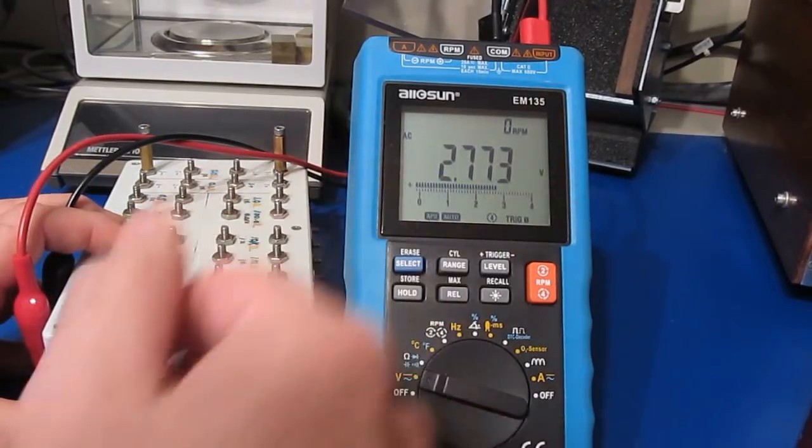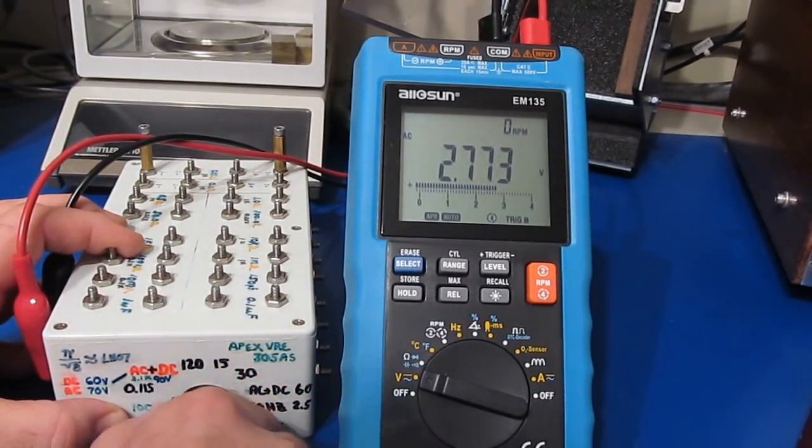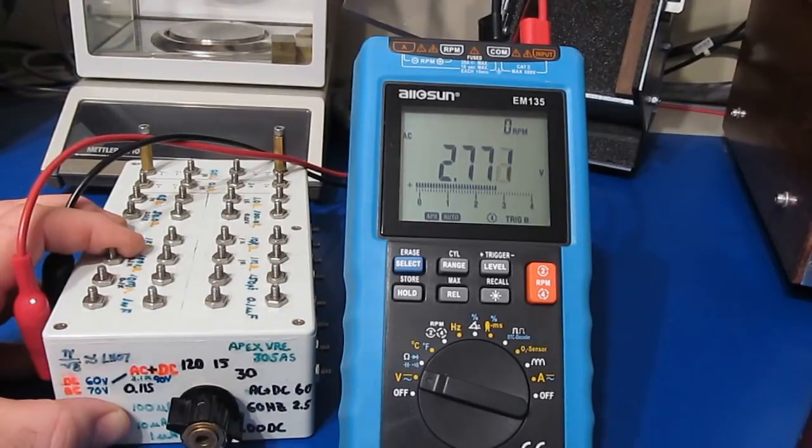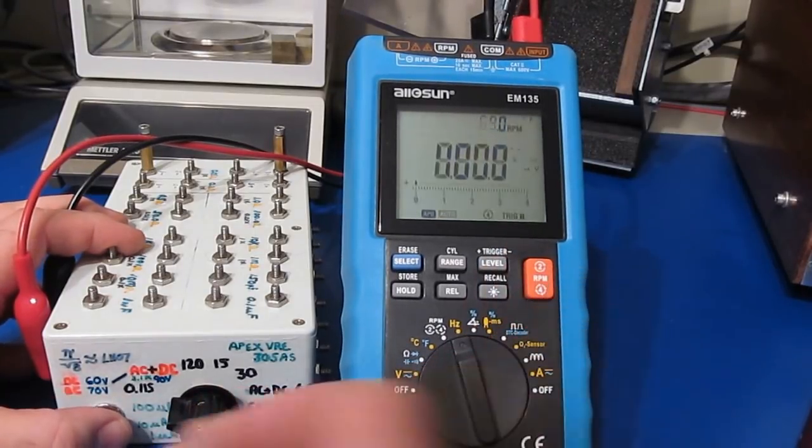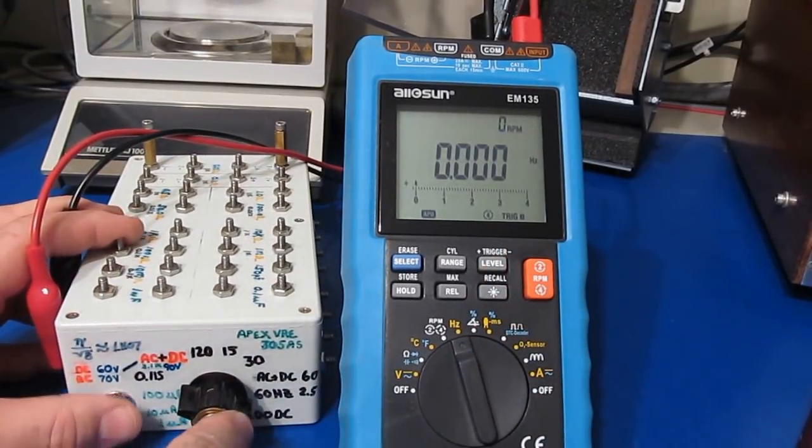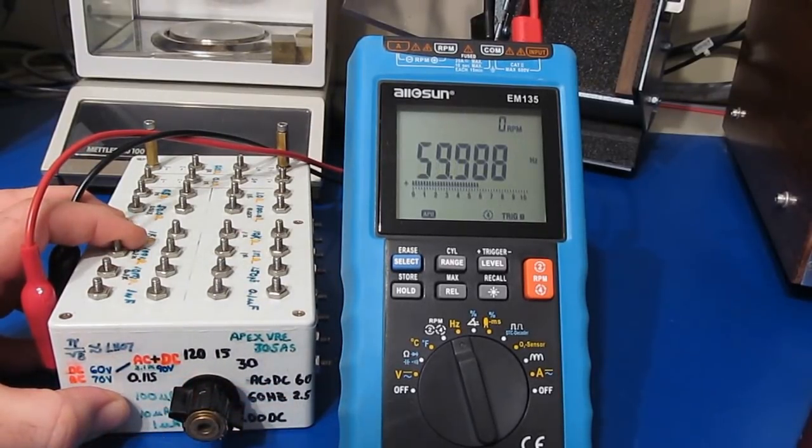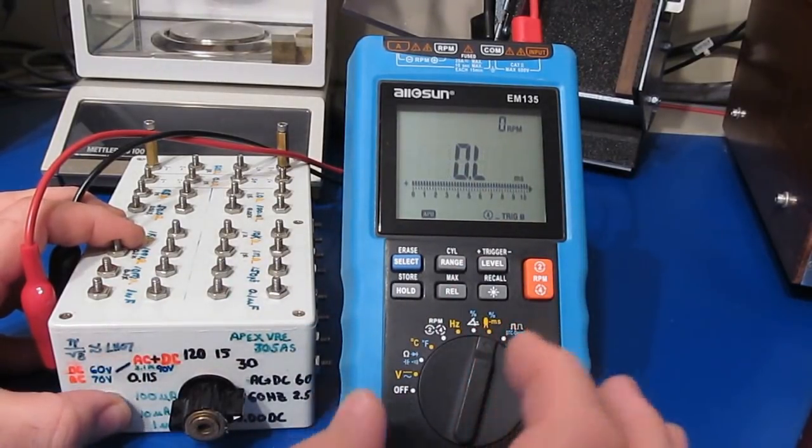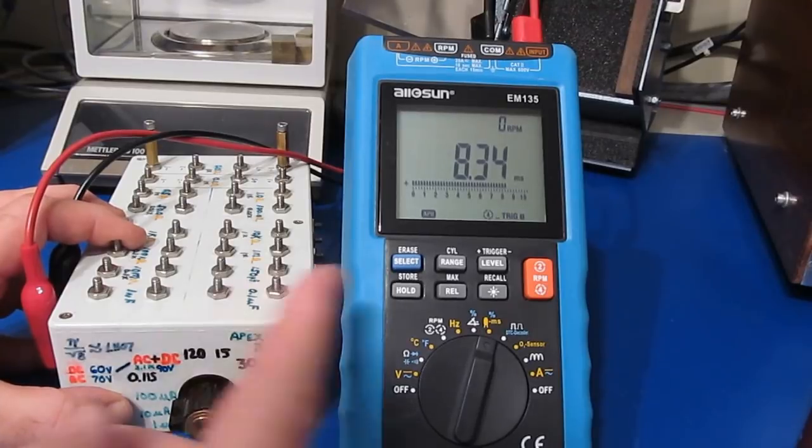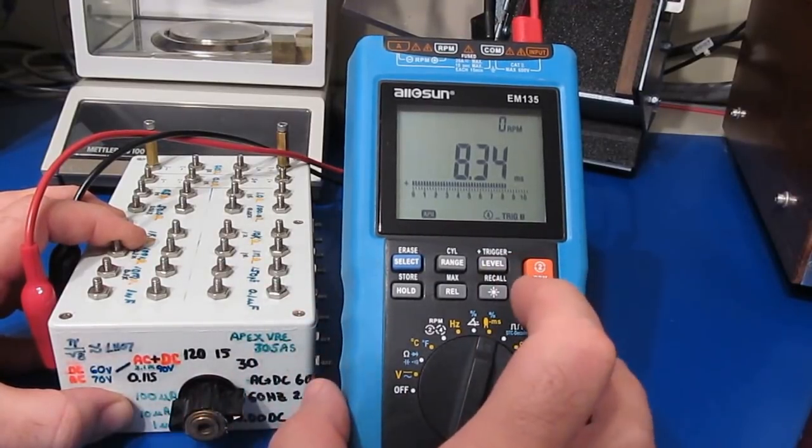Frequency testing shows the AC coupled input at 60 Hertz looks fine, as does the 5-volt DC biased input. Period testing displays roughly 8.3 milliseconds at 50% duty cycle.